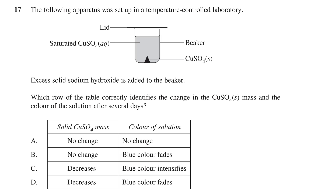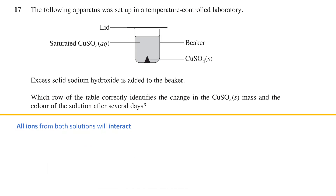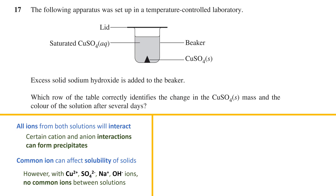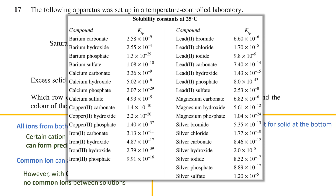We need to consider what effect introducing sodium hydroxide will have on the existing copper sulfate setup. As with mixing any two solutions, ions will interact and a precipitate may form. Copper sulfate and sodium hydroxide contain different ions, so we can rule out a common ion effect. Copper sulfate is generally soluble, confirmed by its absence from the insolubility constants list in the exam. However, copper hydroxide is found on that list — it is very insoluble — so when the two solutions mix, copper and hydroxide ions will form a solid precipitate, reducing the copper ions in solution.